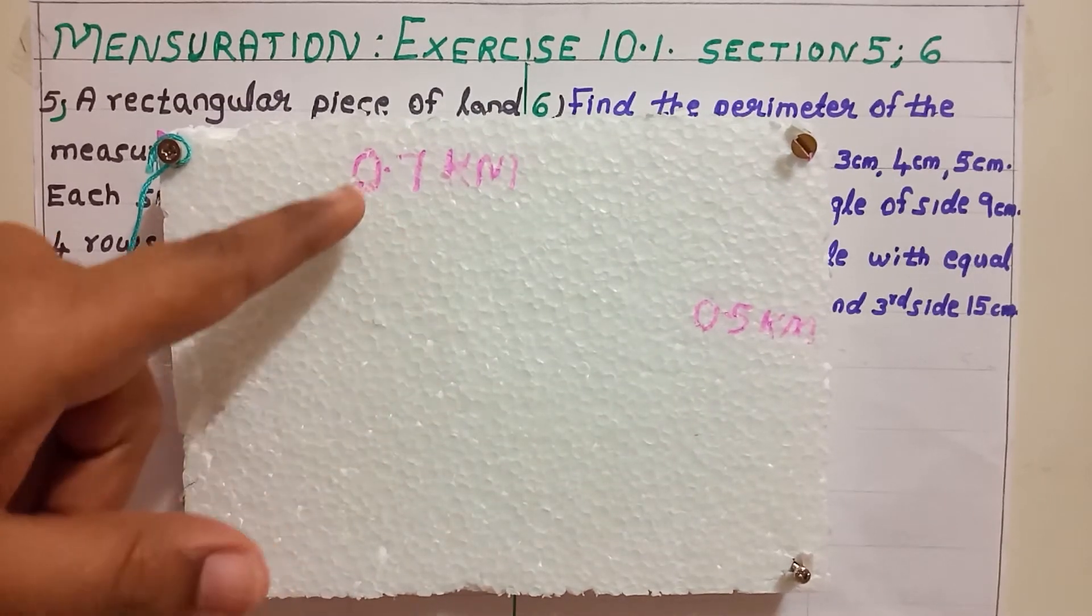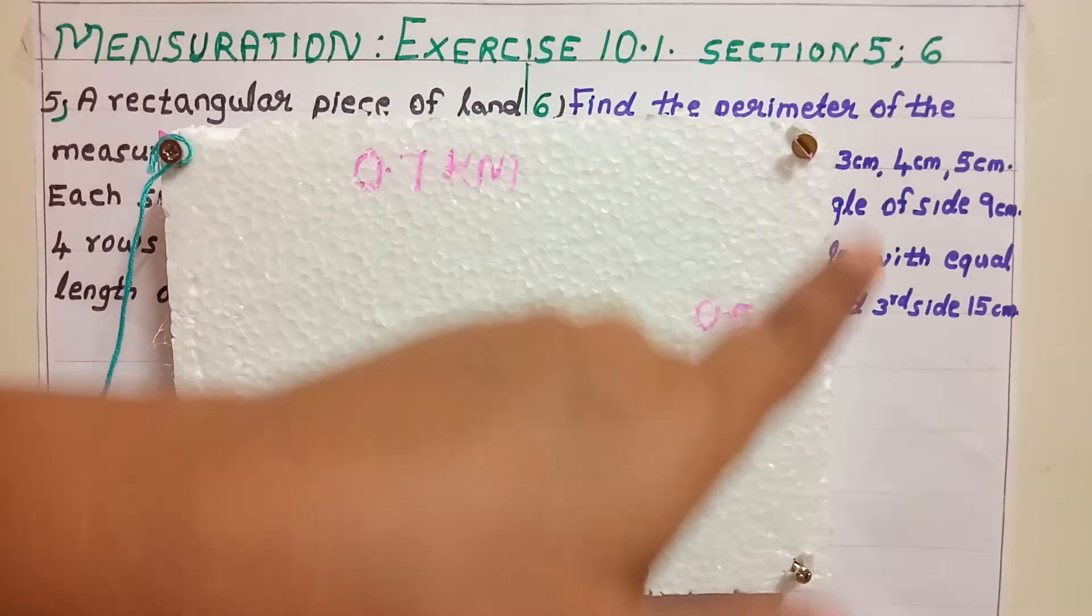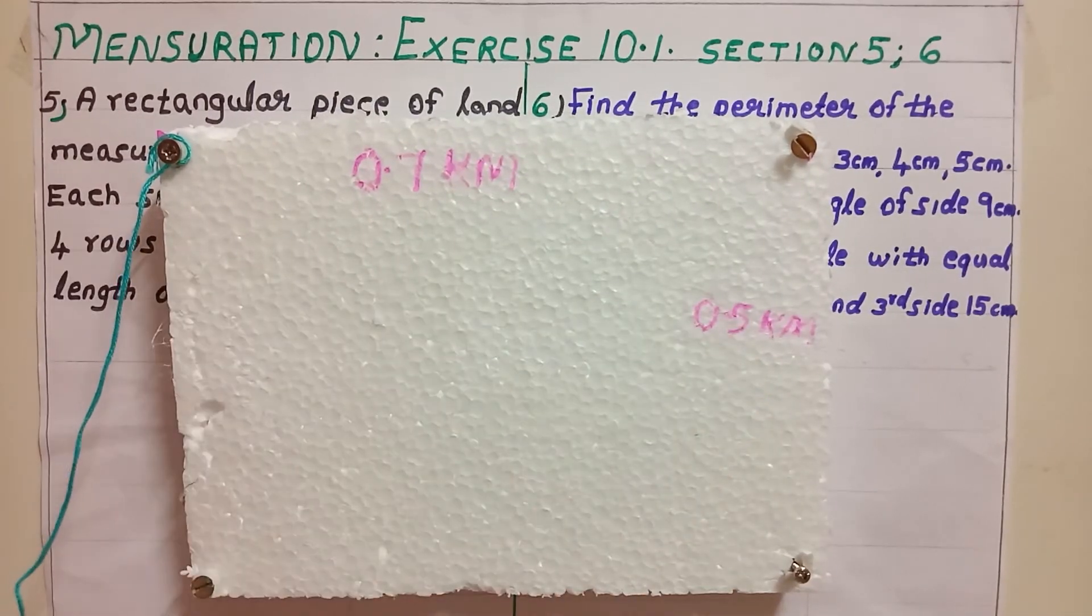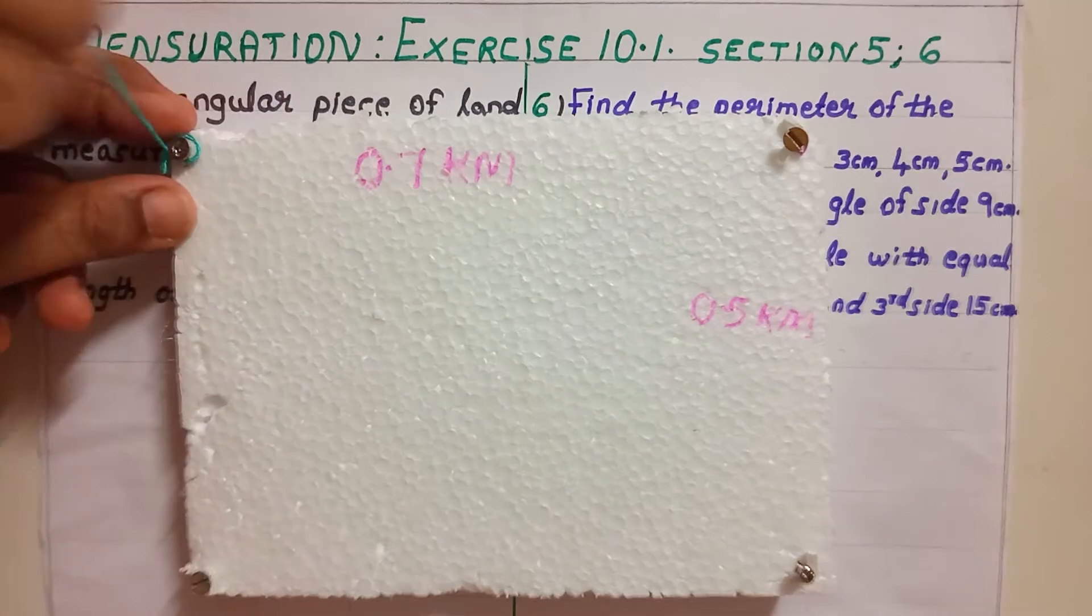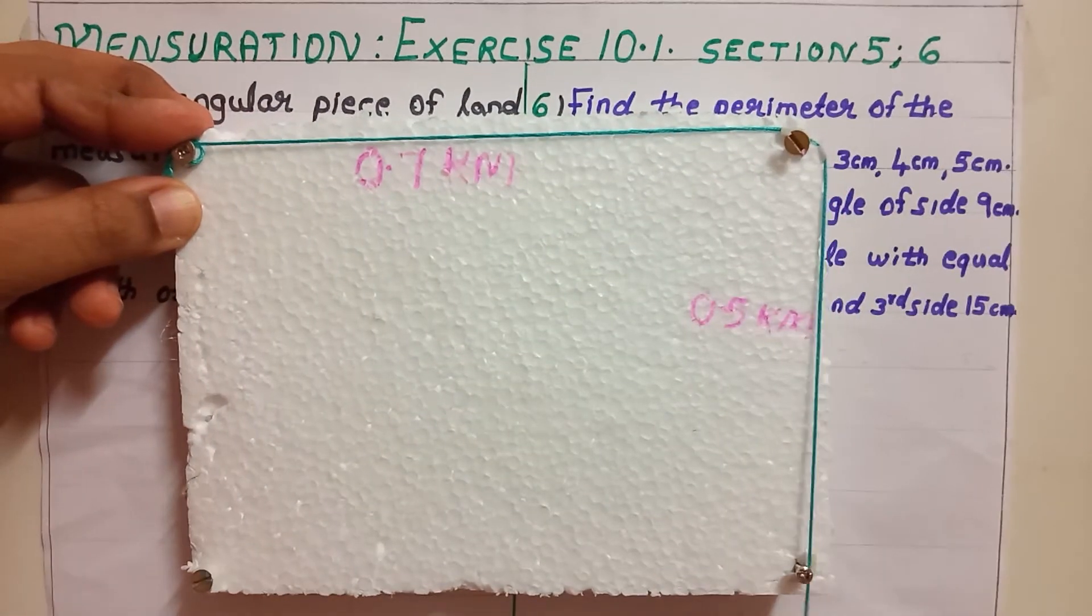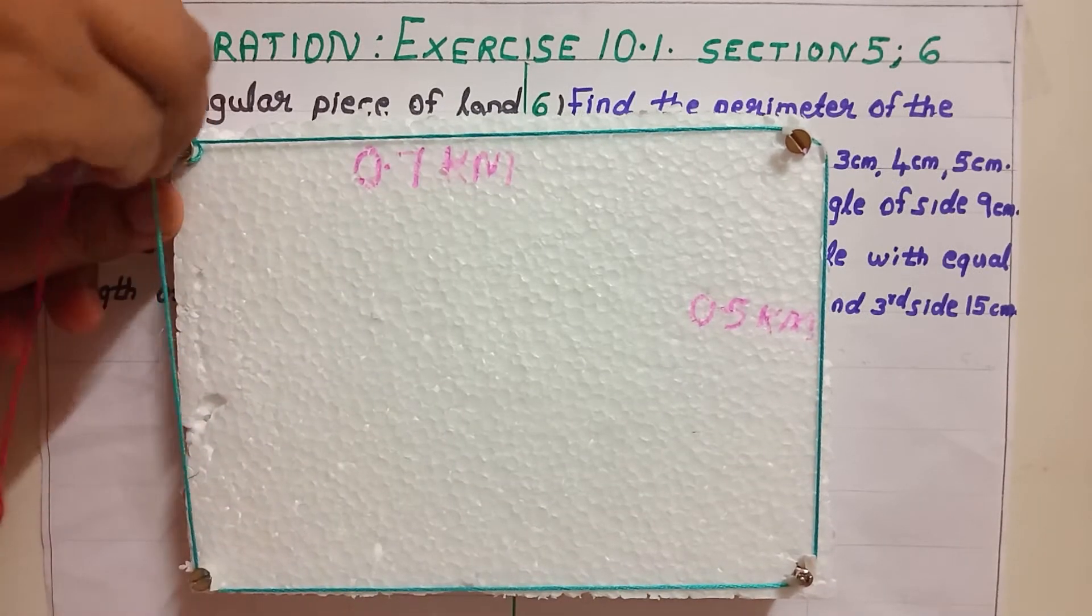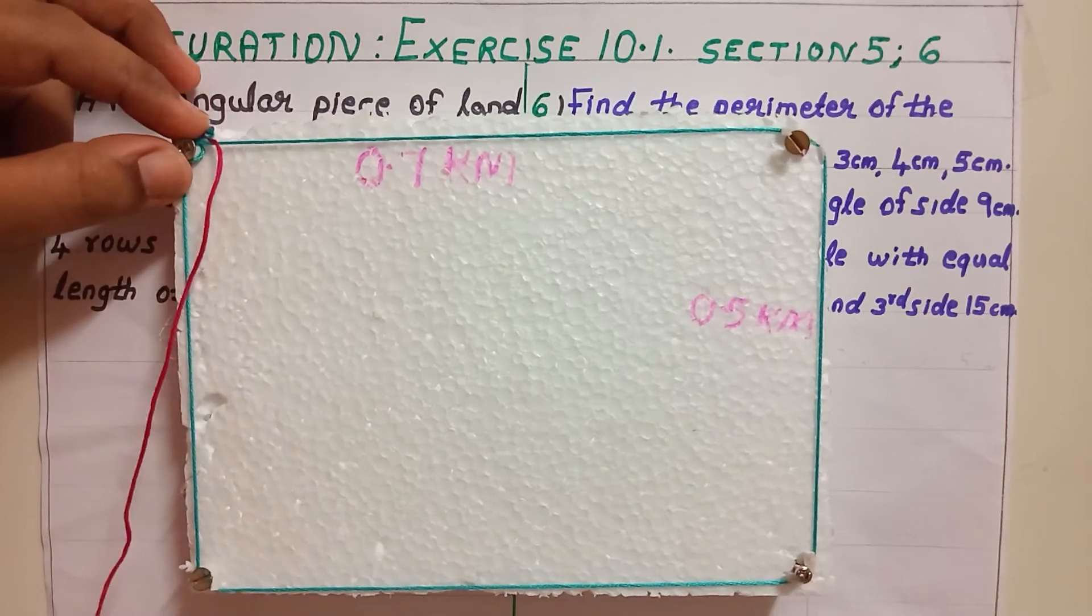See, this is our land to be measured and its length is 0.7 km and breadth is 0.5 km. I have brought a thread for you. See, now the first round of fencing is over.